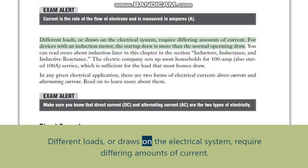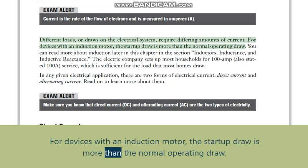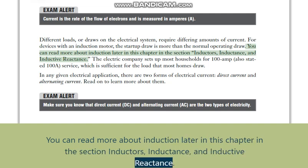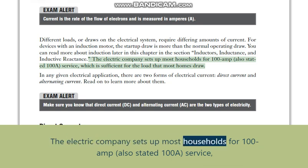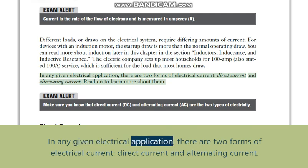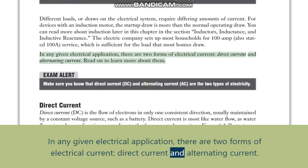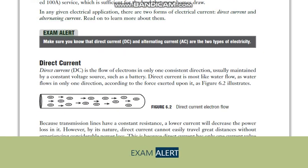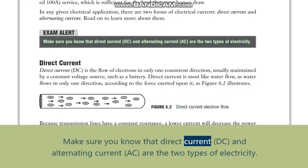Exam alert: current is the rate of the flow of electrons and is measured in amperes (A). Different loads or draws on the electrical system require differing amounts of current. For devices with an induction motor, the startup draw is more than the normal operating draw. The electric company sets up most households for 100-amp (100A) service, which is sufficient for the load that most homes draw. In any given electrical application there are two forms of electrical current: direct current and alternating current. Exam alert: make sure you know that direct current (DC) and alternating current (AC) are the two types of electricity.